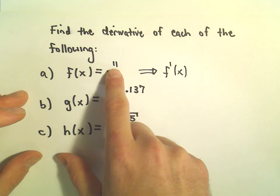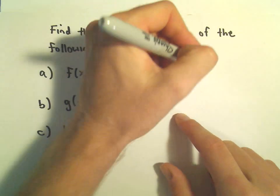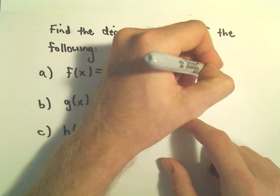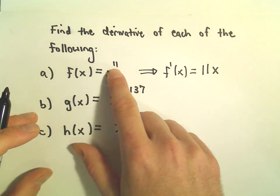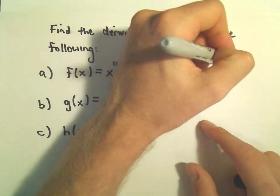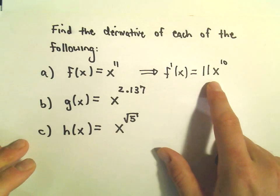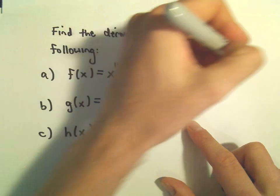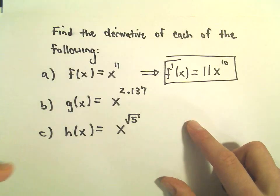When we take the derivative, again, that number just comes out front. So we'll get 11 times x, and then we subtract 1 from the exponent. Well, 11 minus 1 would just give us 10. And we get 11 times x to the 10th. That's our derivative, and that's all we have to do for part A.